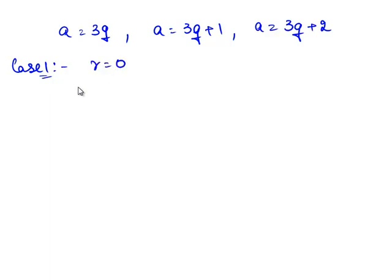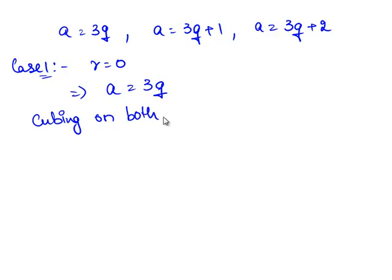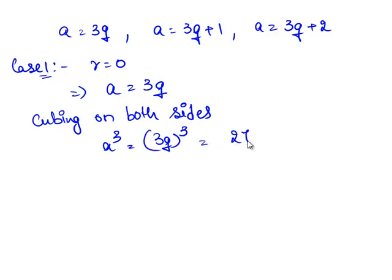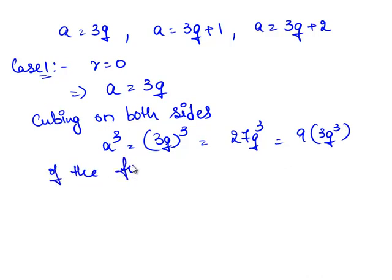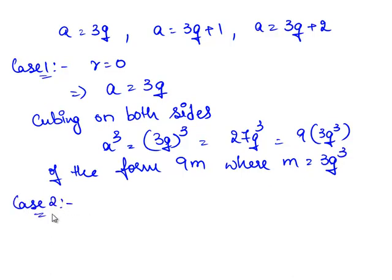Consider the first case where r equals 0. This implies a equals 3q. Cubing on both sides, a³ equals (3q)³, which is 27q³. This can be written as 9 times 3q³, which is of the form 9m, where m equals 3q³.